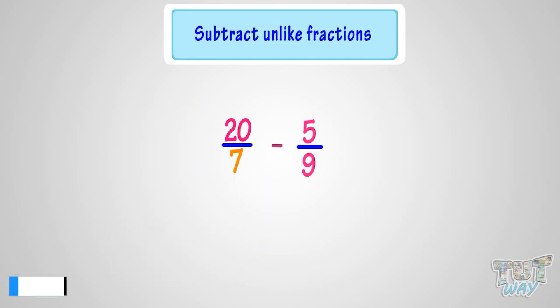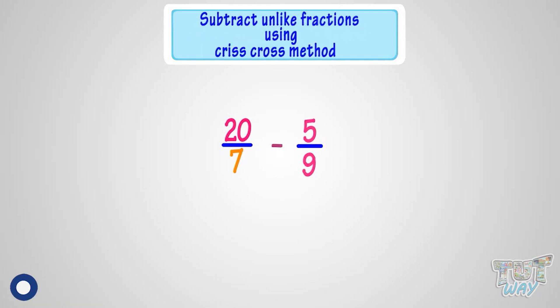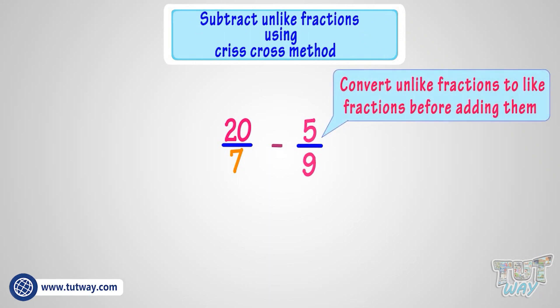We have to subtract 5 by 9 from 20 by 7. These are unlike fractions. So first we use the criss-cross method to convert them to like fractions.